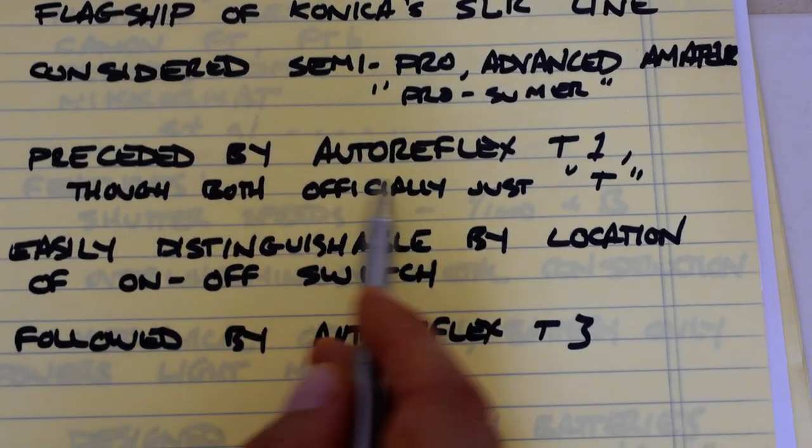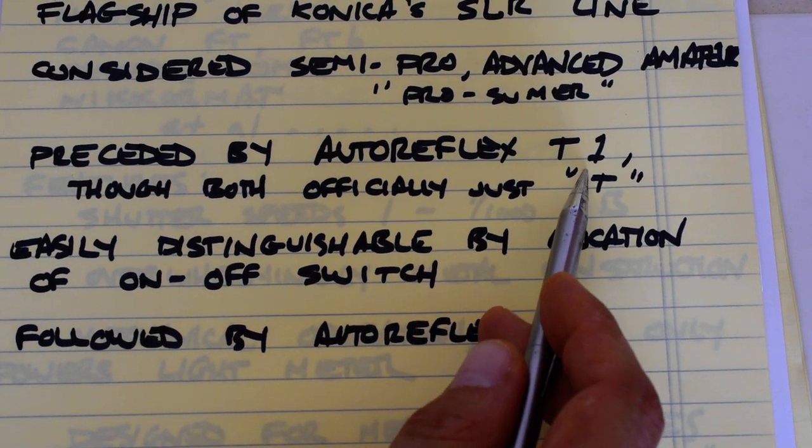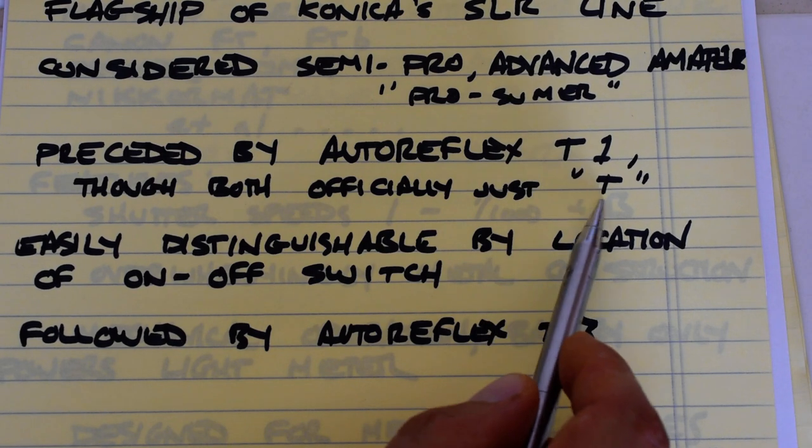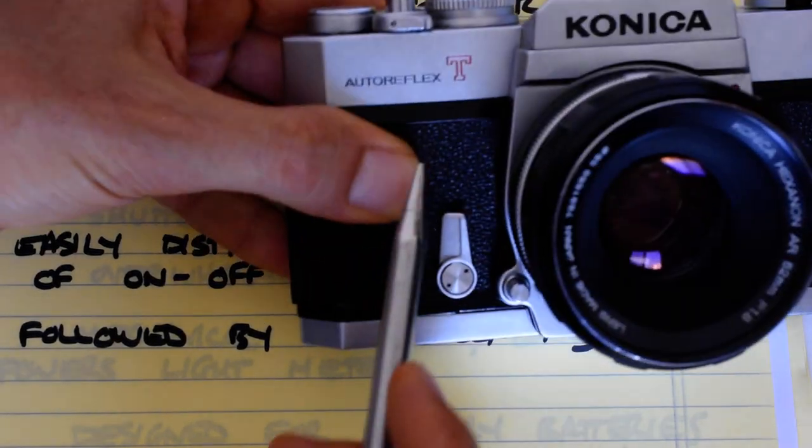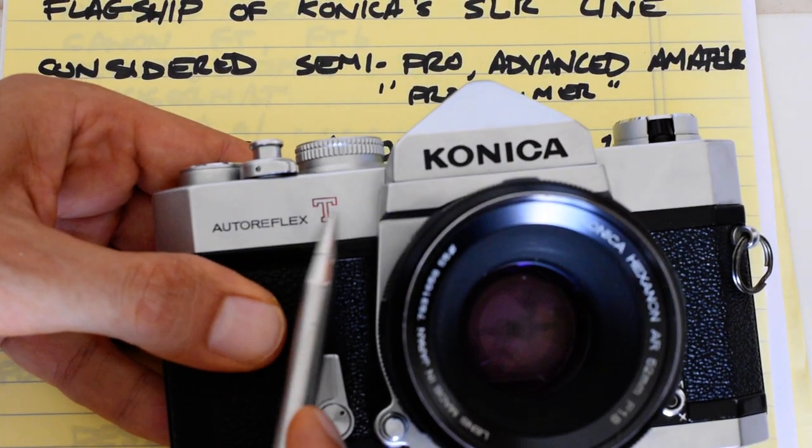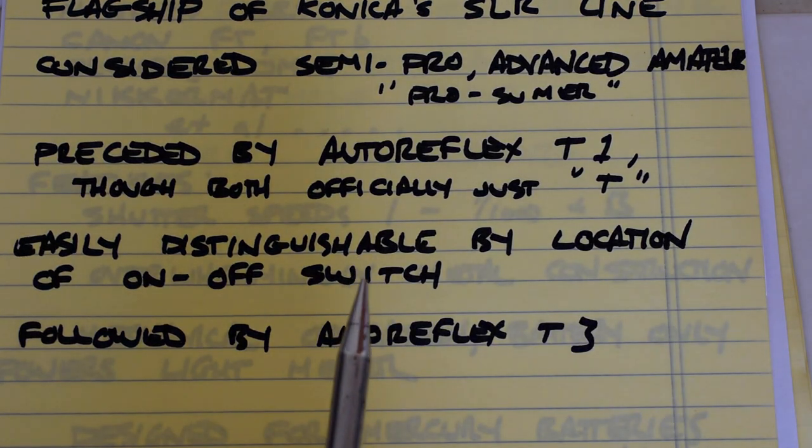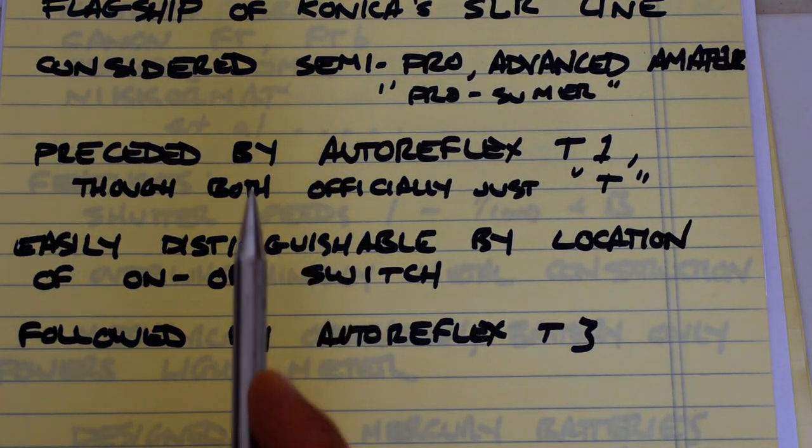It was preceded by the Autoreflex T1, although both the T1 and T2 are officially just the T. You'll notice that here on the front of the camera it simply says T. There's no number next to the T.